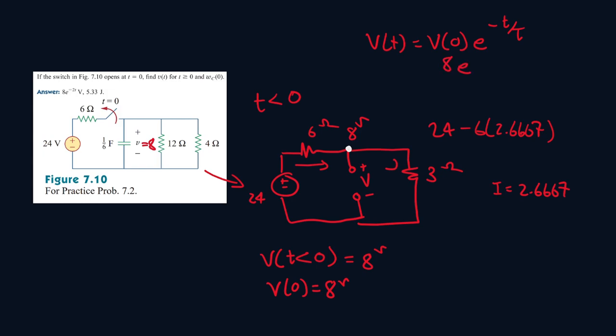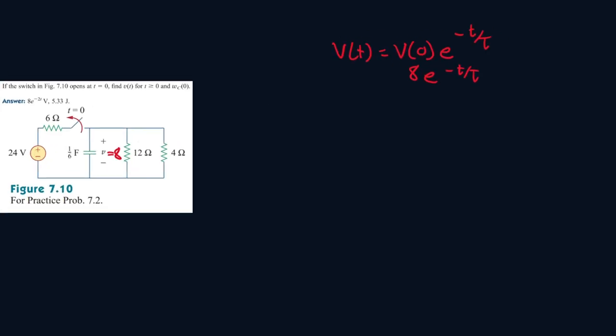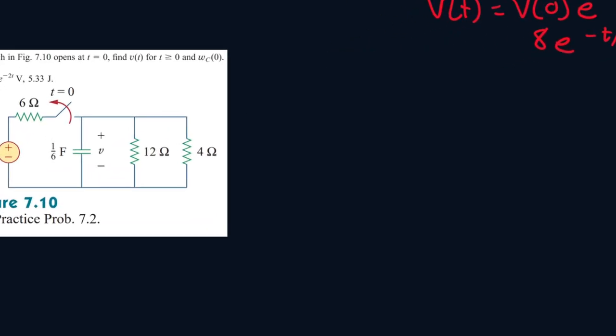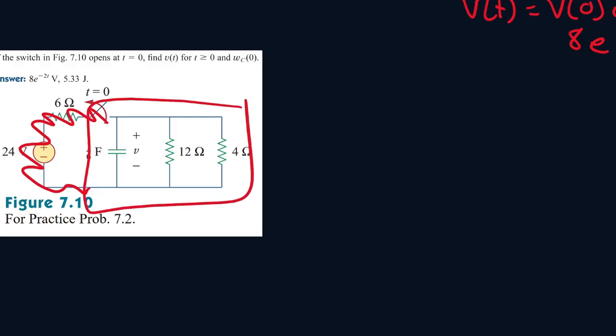So it's going to be 8e to the T over the time constant. Now, the time constant is the next part we have to solve for. So let me get rid of all of this. So to find a time constant, let's look back into our circuit. So when t is equal to zero, it's open. Okay. So that means we can ignore this portion of the circuit and just focus on this portion.